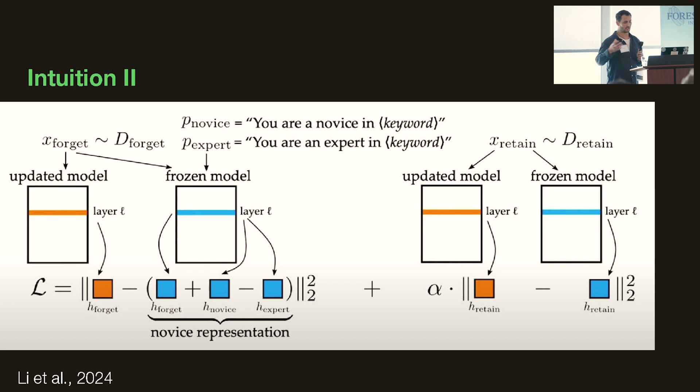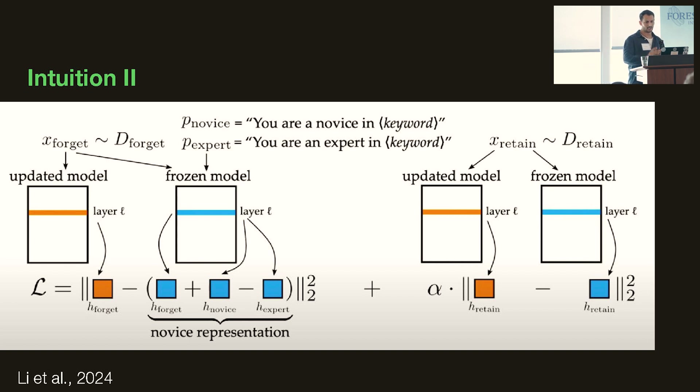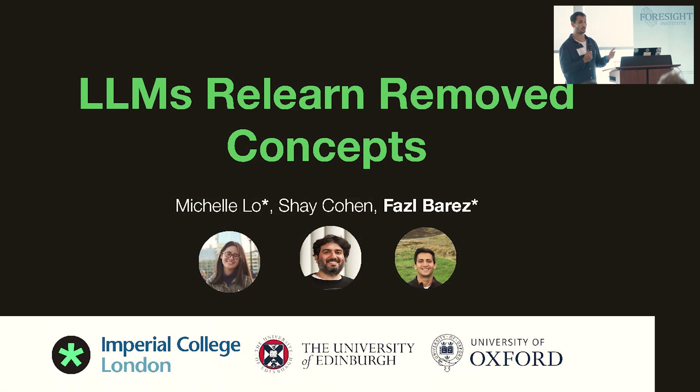So you want to do unlearning such that you keep the novice representation — the basic representations required for anyone to do anything with those models. The goal is to give you a basic intuitive understanding of how unlearning might work. Because I'm going to move on and tell you that whenever you do any sort of unlearning, models actually have the capacity to relearn those removed concepts. This is joint work with Michelle and Shai.